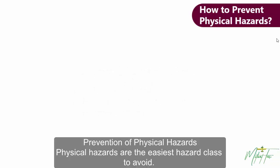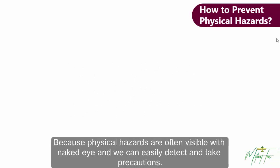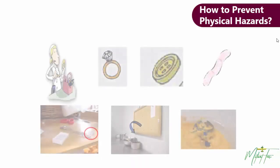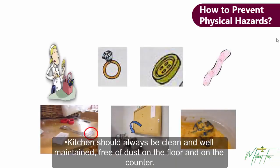Prevention of Physical Hazards. Physical hazards are the easiest hazard class to avoid, because physical hazards are often visible with the naked eye and we can easily detect and take precautions. To prevent physical hazards in our kitchen, the kitchen should always be clean and well maintained, free of dust on the floor and on the counter.